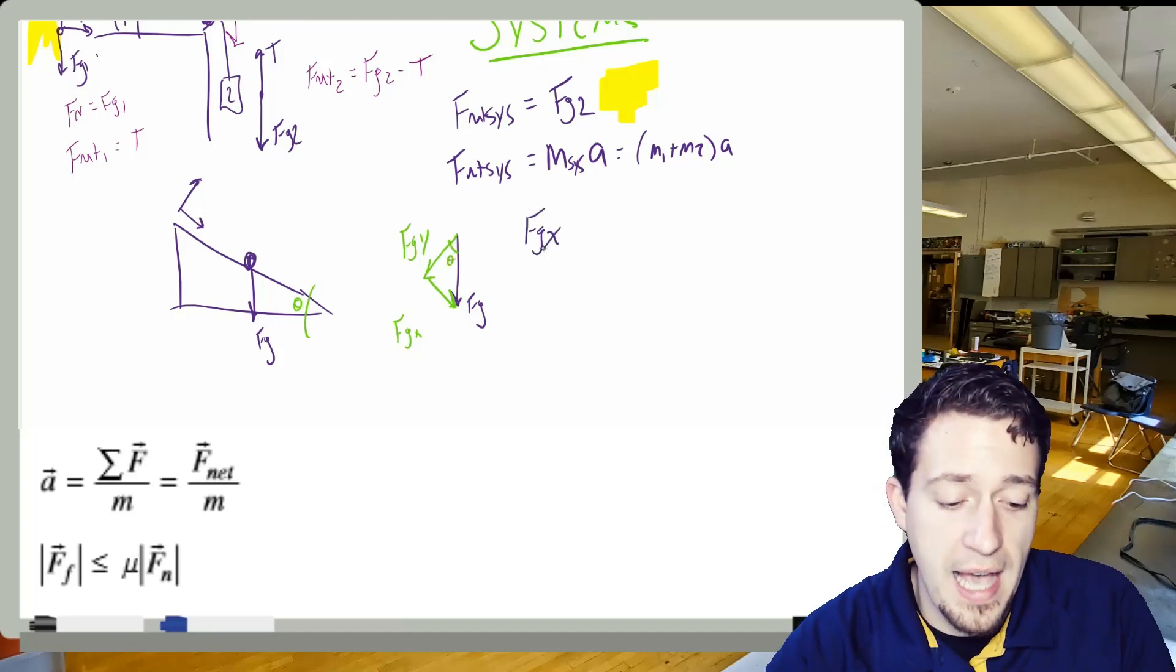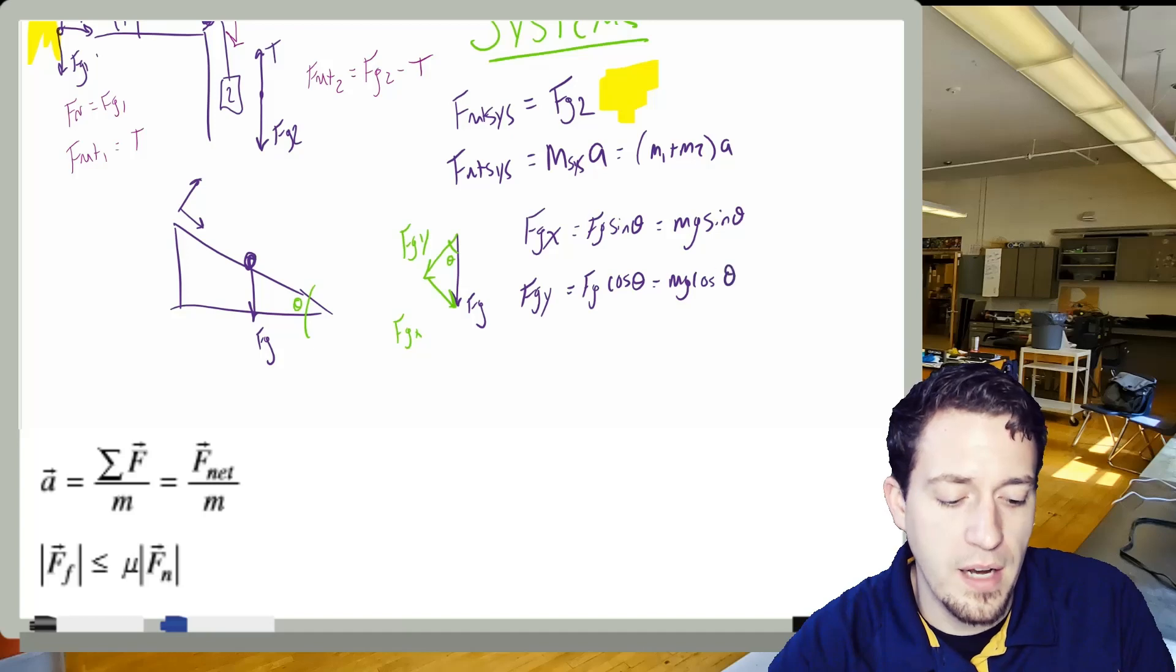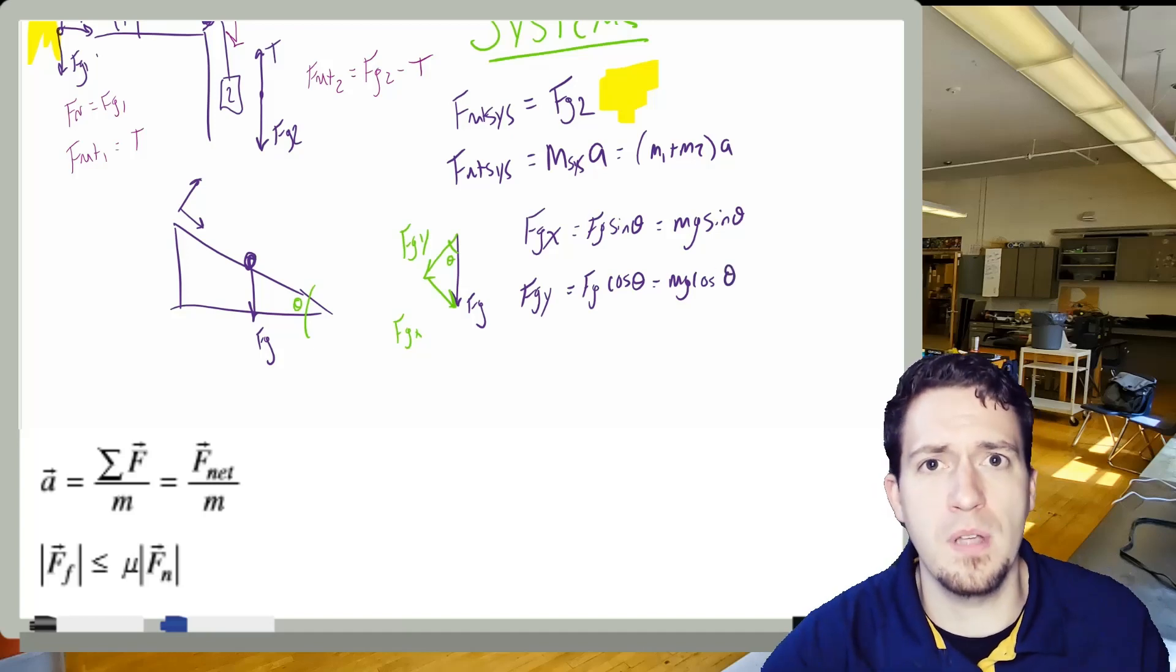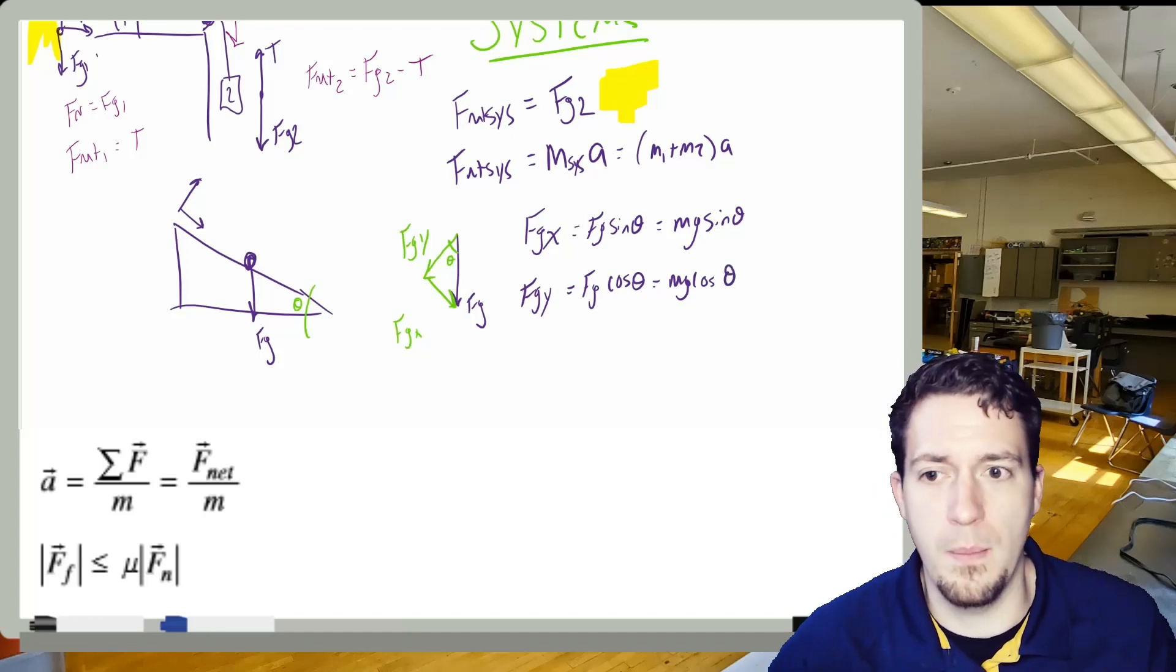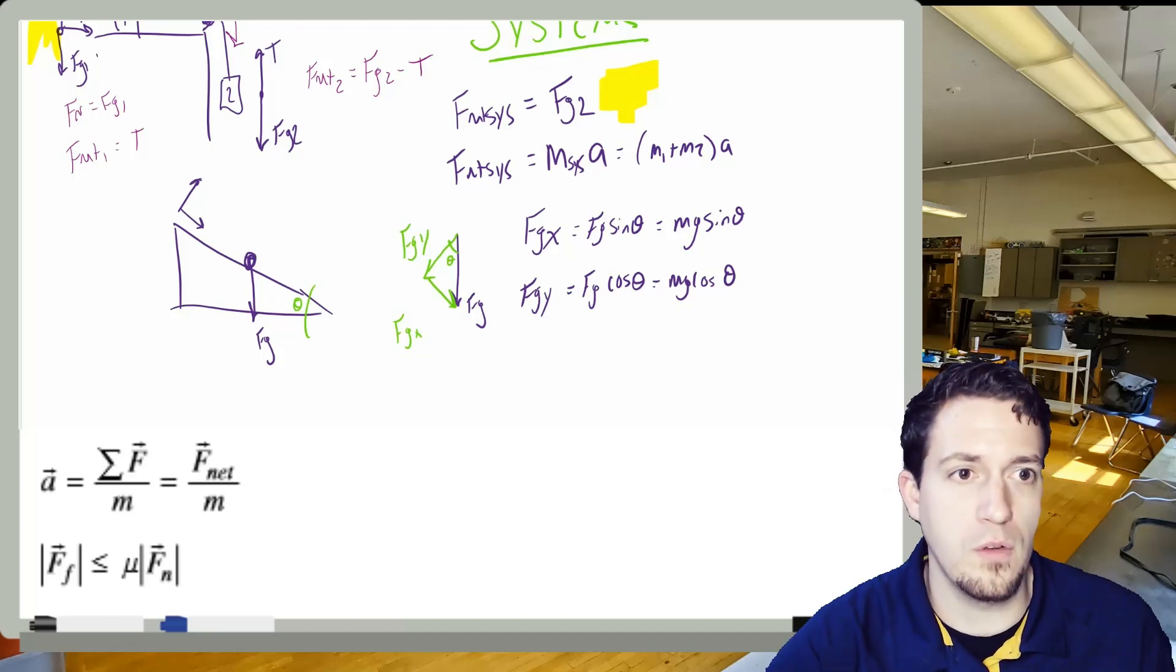And FGX, if you make the triangles this way, is always FG sine theta, or another way to write that would be MG sine theta, and then FGY would be FG cosine theta, or MG cosine theta. And I think ramps need their entire video because there's a lot of other concepts we can bring in. So look forward to that.